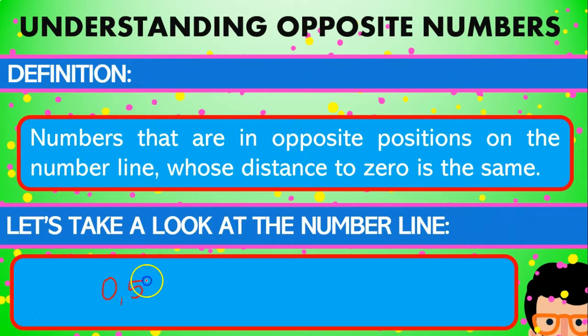And that doesn't even just work for normal numbers, it also works for any type of number like decimals. 0.55, its opposite is going to be minus 0.55.